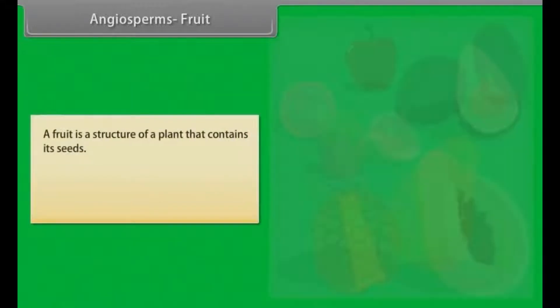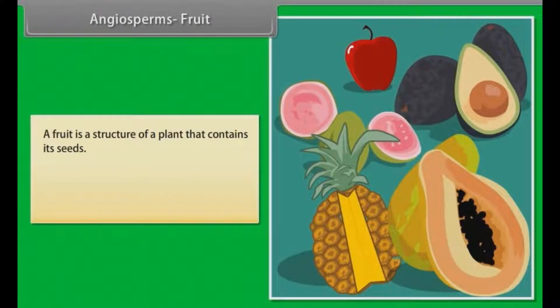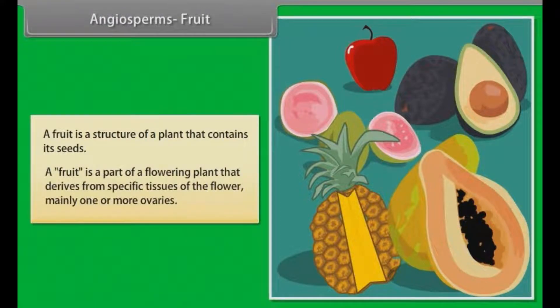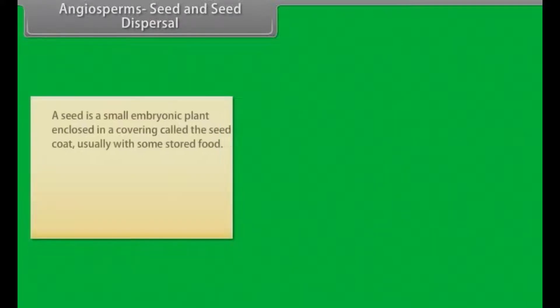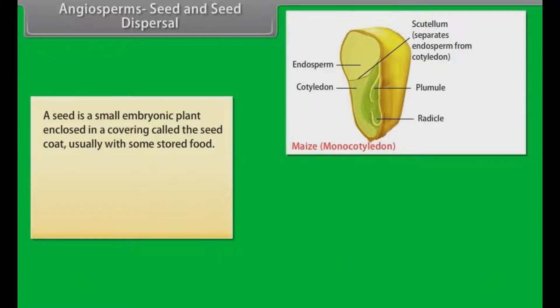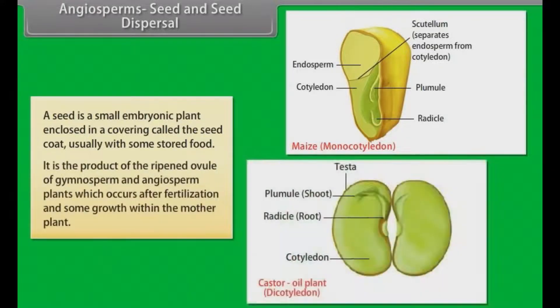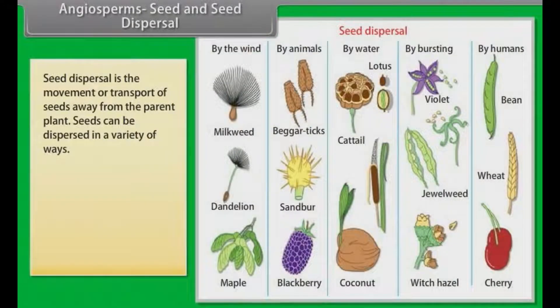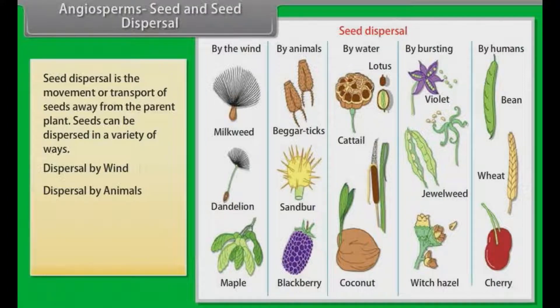Angiosperms — Fruit. A fruit is a structure of a plant that contains its seeds. It is a part of a flowering plant that derives from specific tissues of the flower, mainly one or more ovaries. Seed dispersal is the movement or transport of seeds away from the parent plant. Seeds can be dispersed in a variety of ways: by wind, by animals, by birds, by water, and by man.